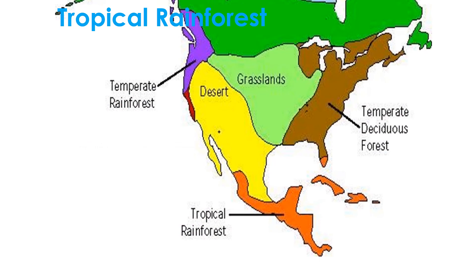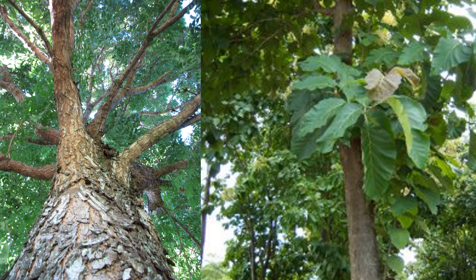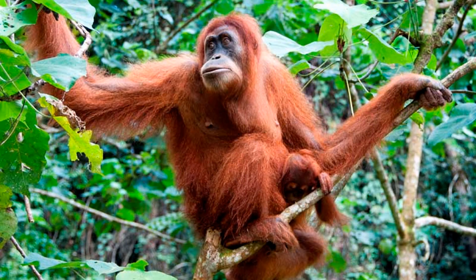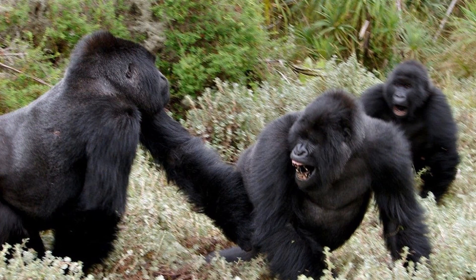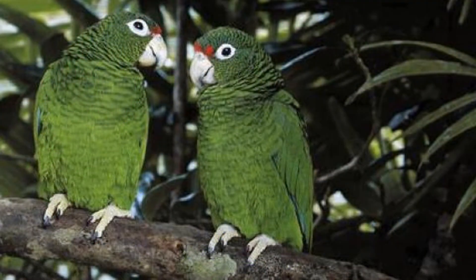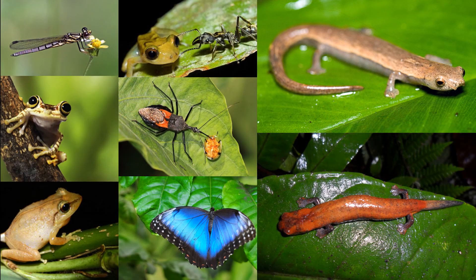Tropical rainforests have the greatest biodiversity and cover most of Central America and all of the Caribbean islands. This area is dominated by broadleaf trees that form a dense upper canopy. You will find strong trees like mahogany and teak, as well as softer trees like ferns and banana. Some of the endangered wildlife include orangutans, gorillas, jaguars, Puerto Rican parrots, insects, amphibians, and reptiles, all thriving in tropical rainforests.